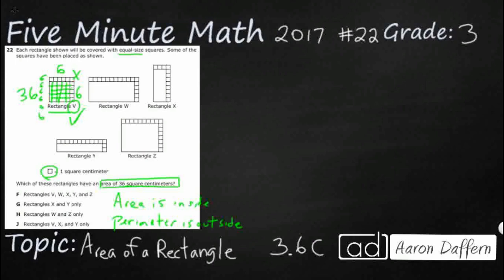So rectangle W is going to be pretty big. It's got 1, 2, 3, 4, 5, 6, 7, 8, 9, 10, 11, 12, so this is like an array 12 by 1, 2, 3, 4, 5, 6. So even though you've already counted this corner one, make sure you count it again for both the length and the width. Well 12 times 6 is going to be much too large, so it's 72 square centimeters. So rectangle W is out. Look at that, I've already eliminated those.